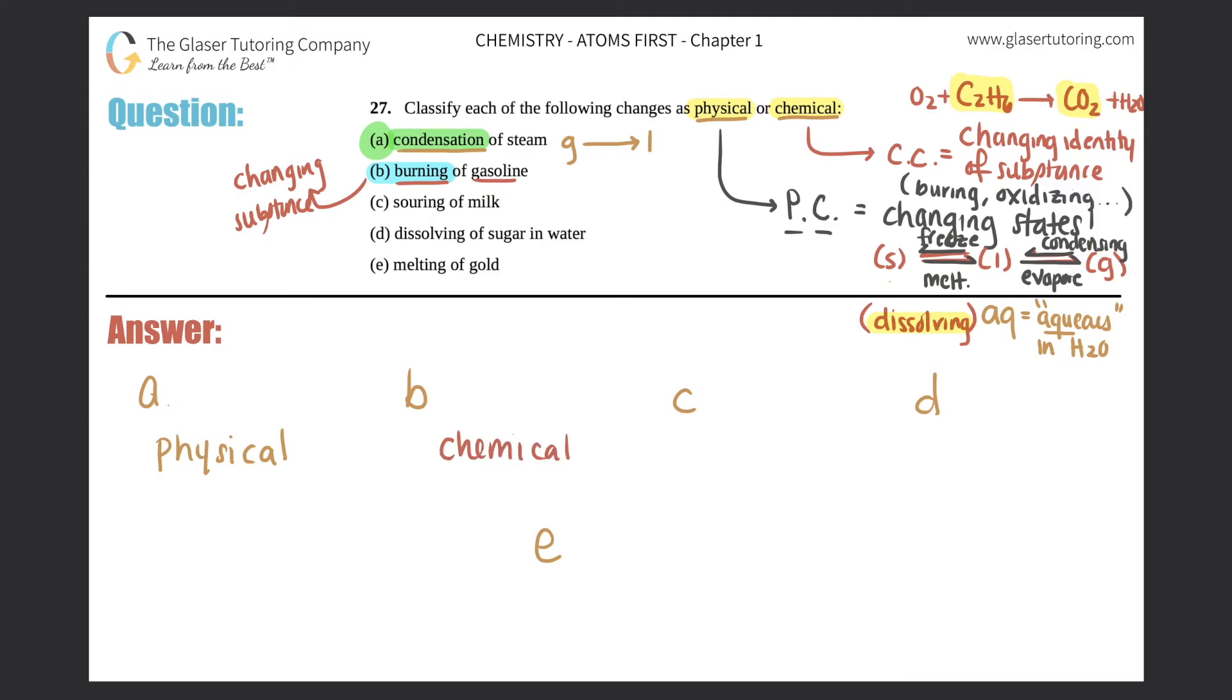Next, souring of milk. Is souring a phase change? No way, right? Souring, if you smell sour milk, it sounds terrible, smells rancid, means disgusting. You would never be able to get good milk back, so it's not a phase change. This is an actual chemical reaction, and it's in the word. This would be a chemical change.